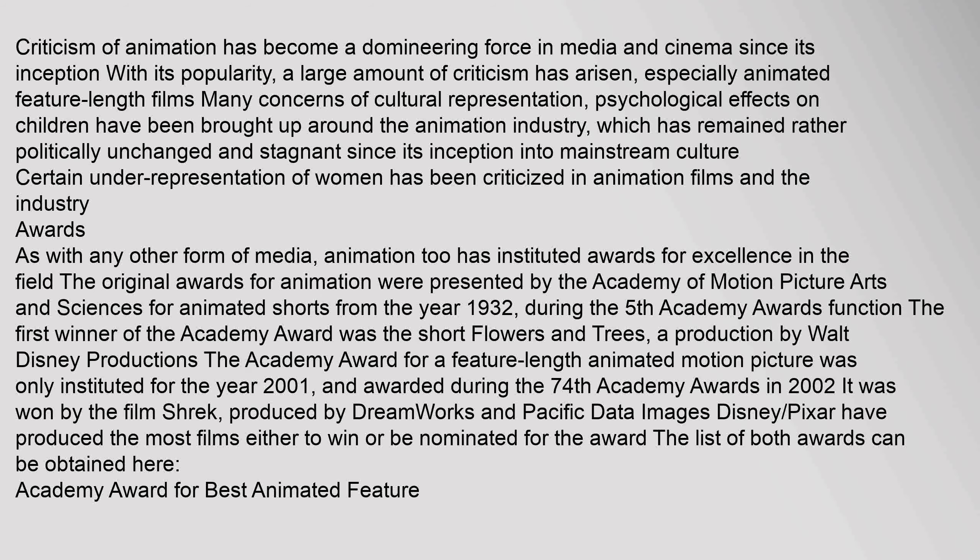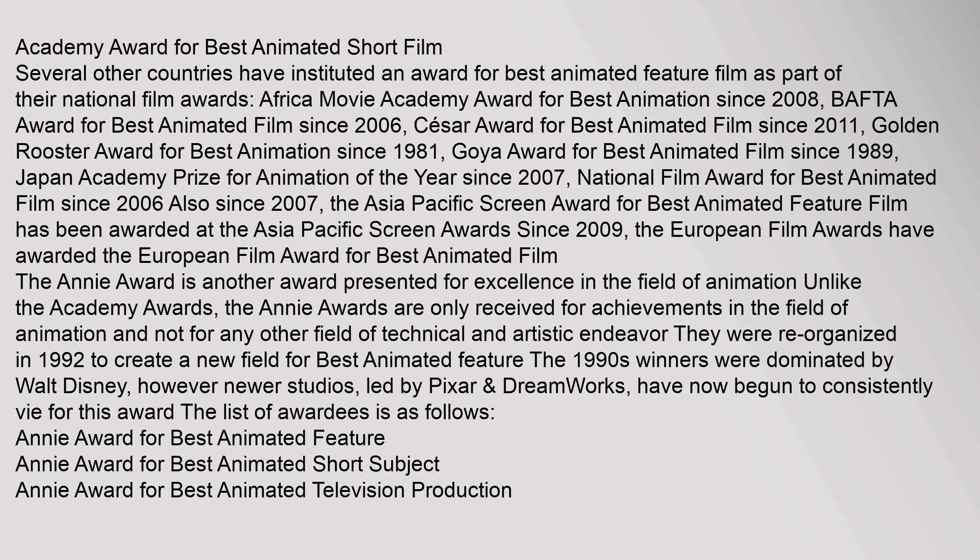Animation has instituted awards for excellence in the field. The original awards for animation were presented by the Academy of Motion Picture Arts and Sciences for Animated Shorts from the year 1932, during the fifth Academy Awards function. The first winner of the Academy Award was The Flowers and Trees, a production by Walt Disney Productions. The Academy Award for a feature-length animated motion picture was only instituted for the year 2001, awarded during the 74th Academy Awards, and won in 2002 by Shrek, produced by DreamWorks and Pacific Data Images. Several other countries have also instituted awards for Best Animated Feature Film, including the BAFTA Award for Best Animated Film (since 2006) and the Africa Movie Academy Award for Best Animation (since 2008).